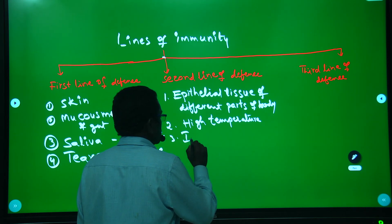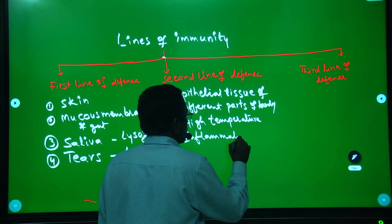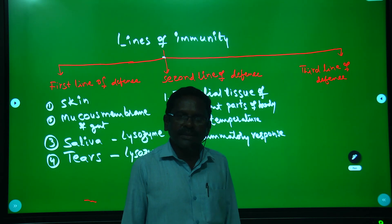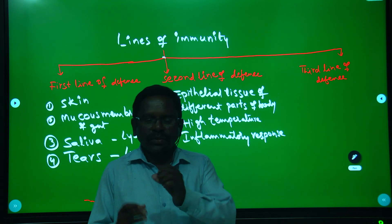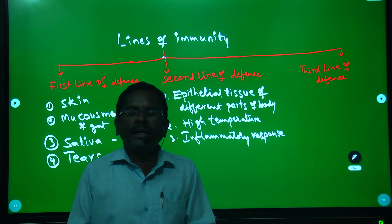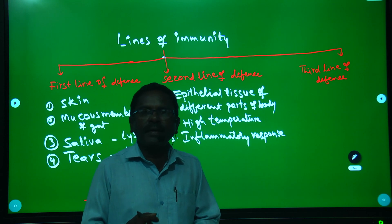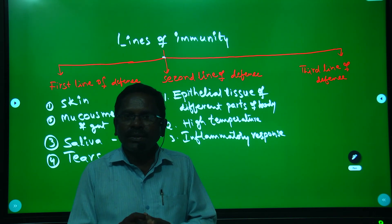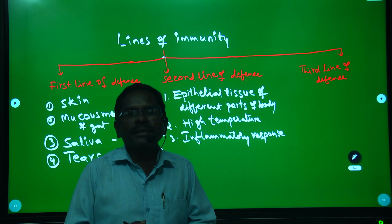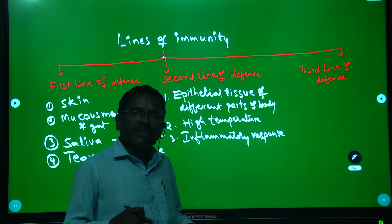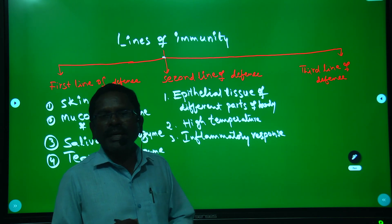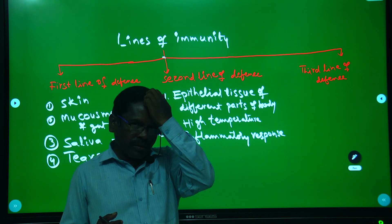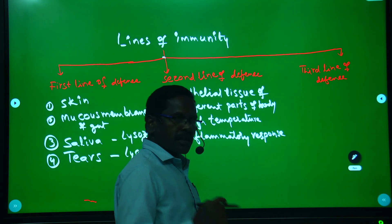Next, inflammatory response. Inflammation means swelling. In areolar tissue, which is present all over the body as a packaging and binding tissue, mast cells are present. When infection takes place, when tissue is damaged, mast cells produce vasoconstrictors and vasodilators. This immune response also kills the germs.